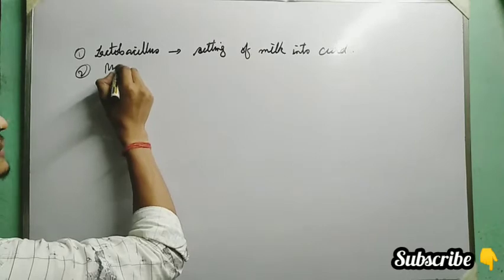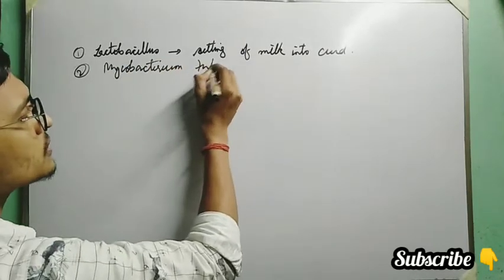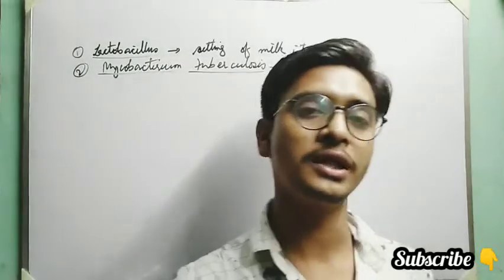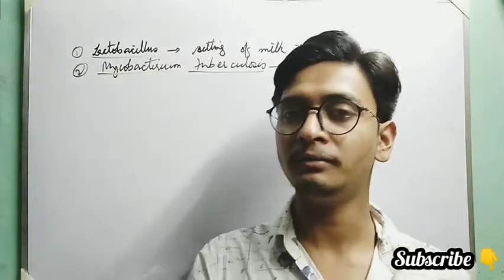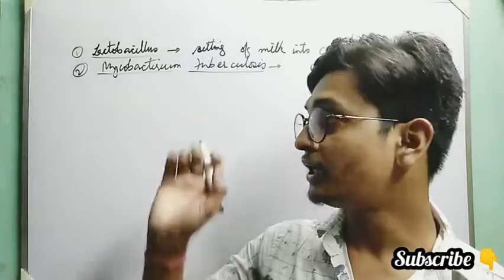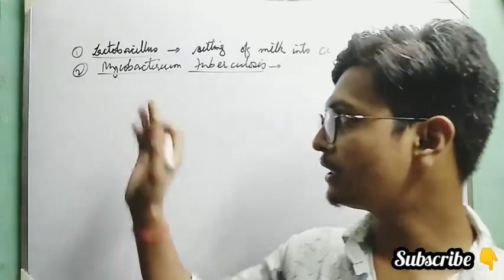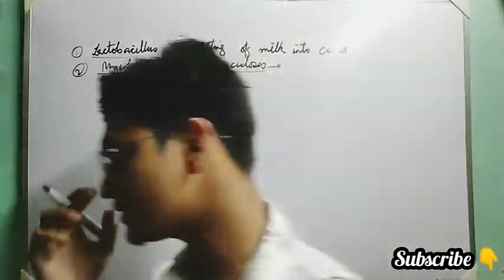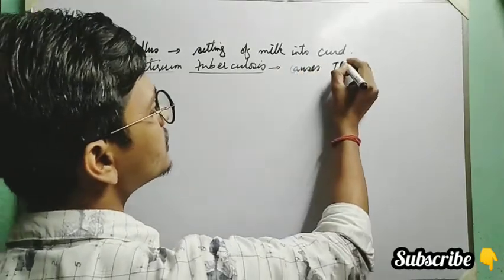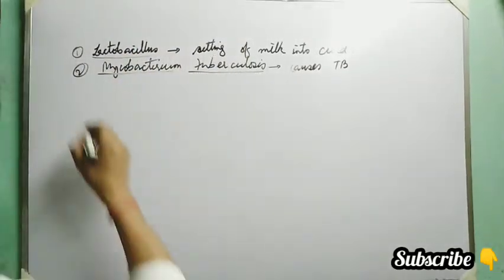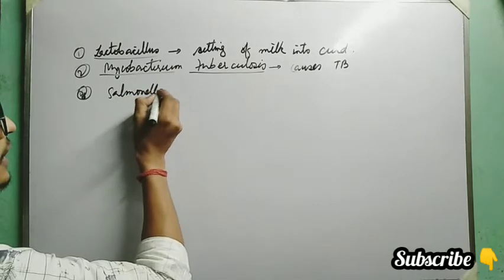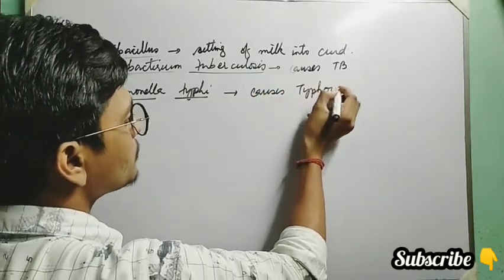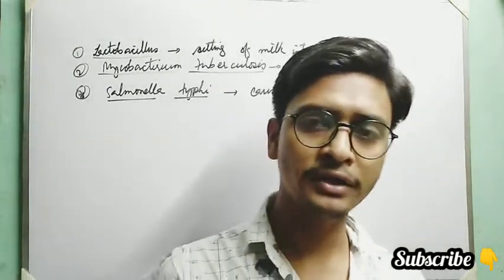Harmful bacteria include Mycobacterium tuberculosis, which causes TB — tuberculosis. Another harmful bacterium is Salmonella typhi — by its name, it causes typhoid disease. Some of you might have suffered from typhoid disease, which can also be fatal in serious cases.